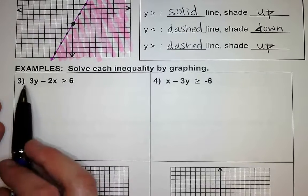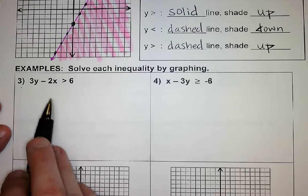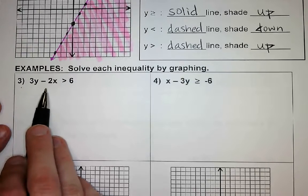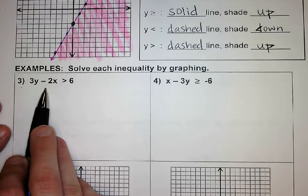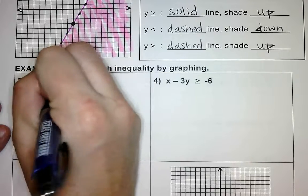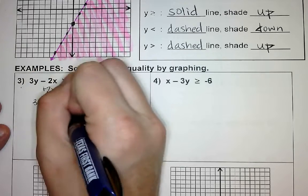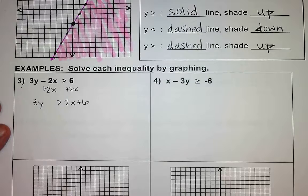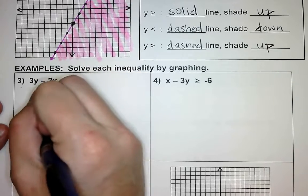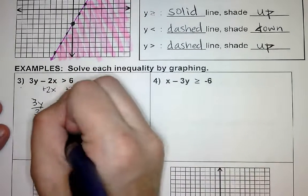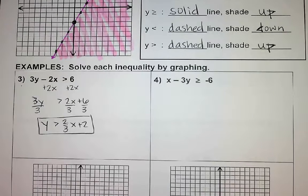For this first one, we need to get it in y equals form. We are going to add 2x to both sides, which leaves us with 3y is greater than 2x plus 6. Then in order to solve for y, we divide everything by 3. My final equation is y is greater than two-thirds x plus 2. This is the line that we are actually graphing.